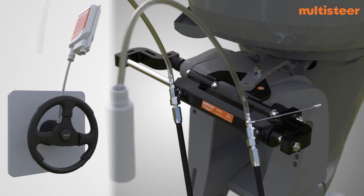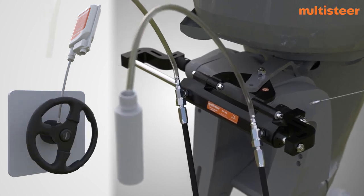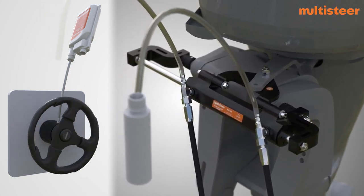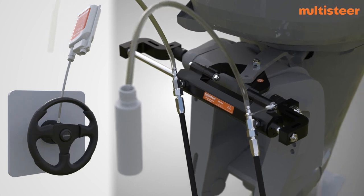Continue to turn the steering wheel towards starboard side. When the oil comes out from the air bleeder without air bubbles, then carefully close the air bleeder.